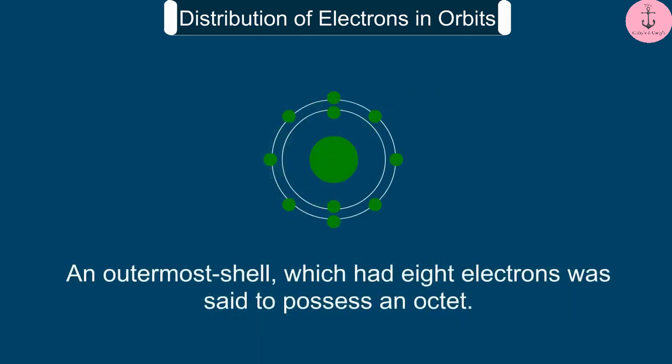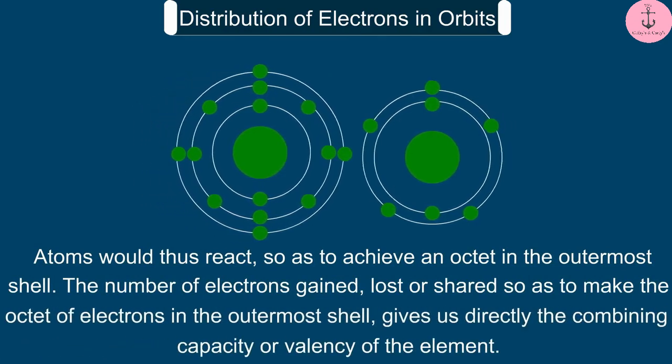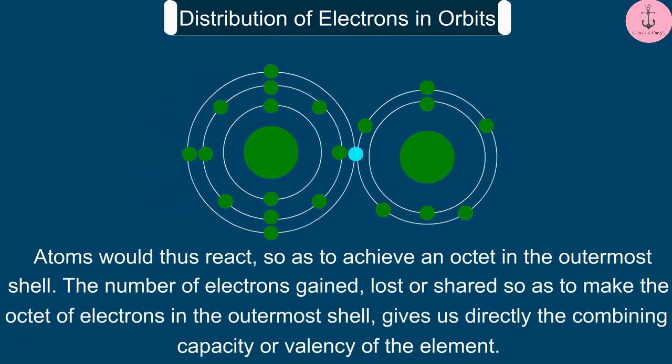Atoms would thus react so as to achieve an octet in the outermost shell. The number of electrons gained, lost, or shared so as to make the octet of electrons in the outermost shell gives us directly the combining capacity or valency of the element.